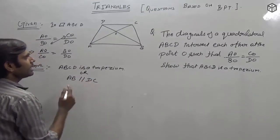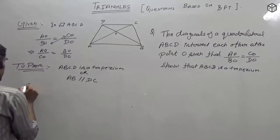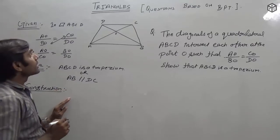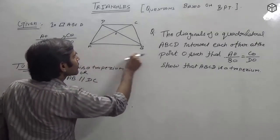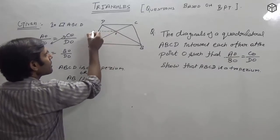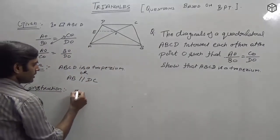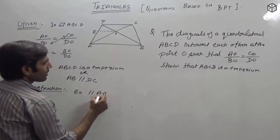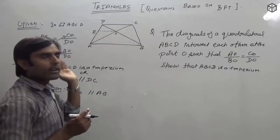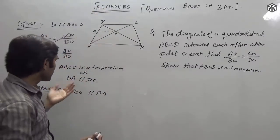We need to prove AB parallel to DC. Now let us go to the construction part. In construction, we will draw the line segment AP parallel to DC. We also draw EO parallel to AB. Our target is to show EO parallel to AB and EO parallel to DC, so that AB is parallel to DC.